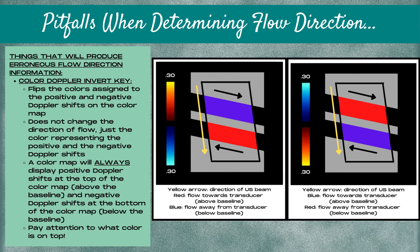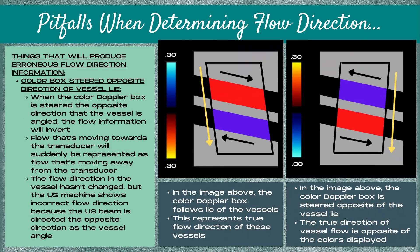A color map will always display positive Doppler shifts at the top above the baseline and negative Doppler shifts at the bottom below the baseline. Pay attention to what color is on top and bottom — it can be red, blue, green, or pink. What matters is reading the map to determine which color represents positive shifts and which represents negative. The BART acronym (blue away, red towards) is a faulty teaching method. If your color box is steered the opposite direction of the vessel, flow information will invert — flow towards the transducer will appear as flow away, which is incorrect.